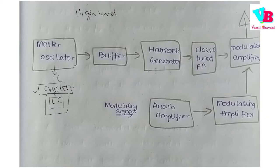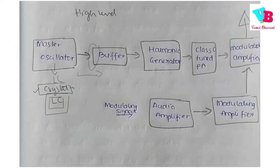Then we use the Buffer. In general, when we connect a load, the output current is low and it can vary. The load draws current, so we use a Buffer which is stable and has high impedance — high resistance — so we draw low current from the oscillator.